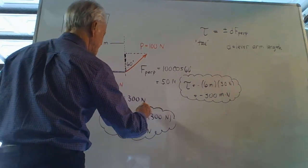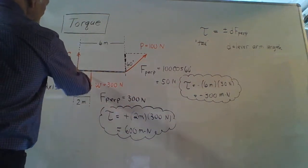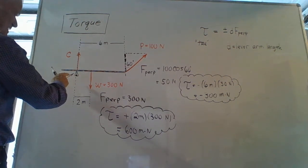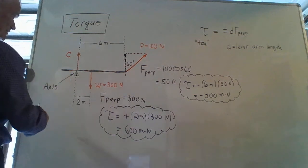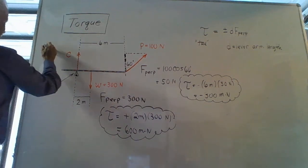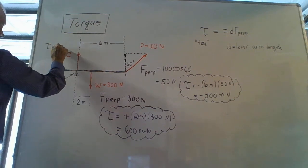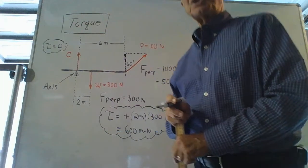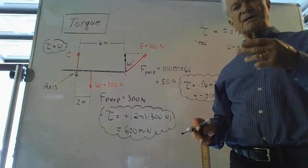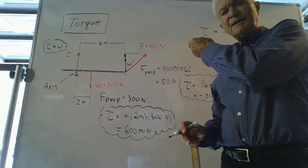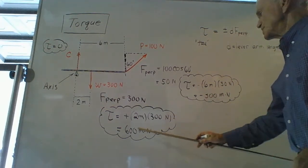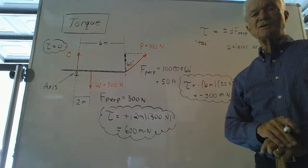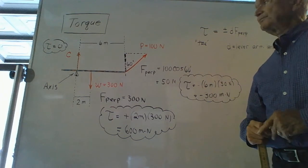The third and last force: the torque due to the contact force is zero because the lever arm length D is zero. Some problems ask you to determine the total or net torque acting on an object. In this case, it would be 600 + (−300) + 0 = 300 meter-newtons.